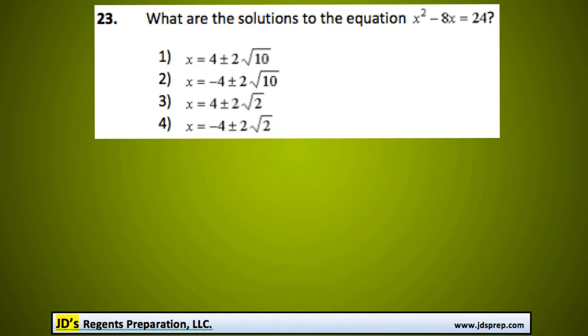Welcome to problem number 23 from the June 2015 Algebra Regions exam. In this question, we're trying to find the solutions to the equation x squared minus 8x equals 24.